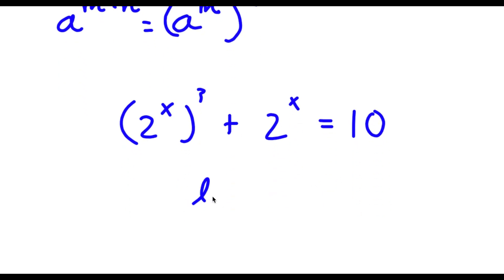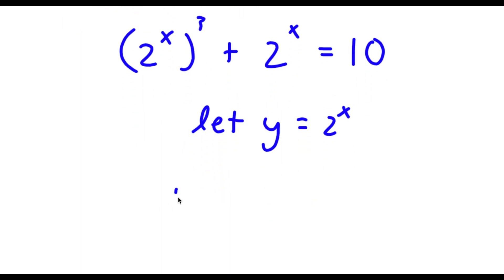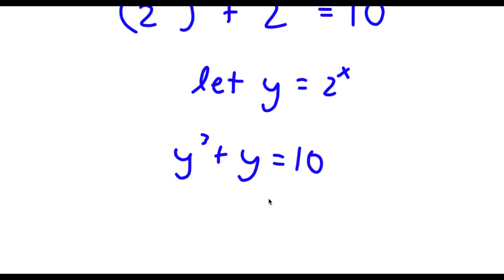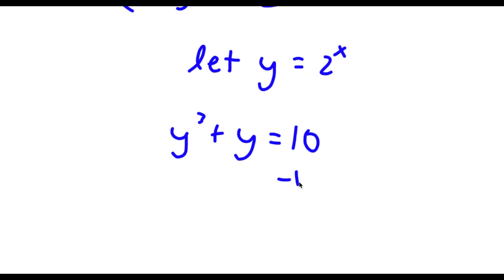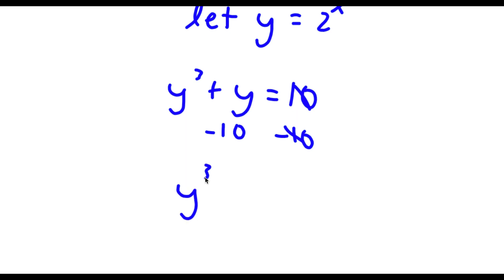I'm going to let y equal 2 to the power of x. So now I have y to the power of 3 plus y equals 10. If I subtract 10 on both sides, I get y to the power of 3 plus y minus 10 is equal to 0.